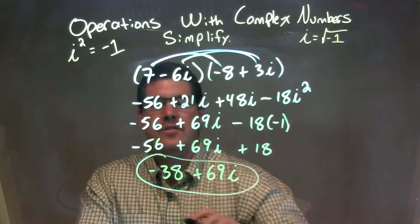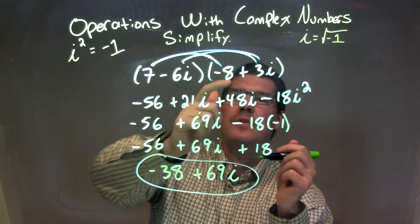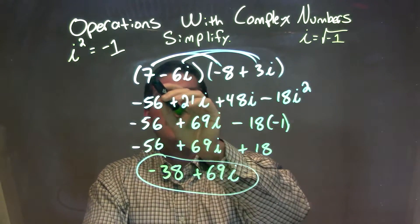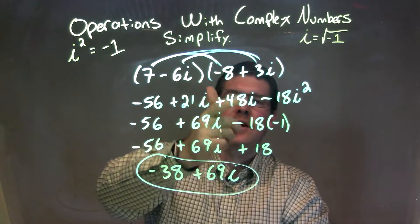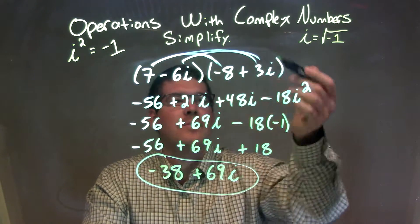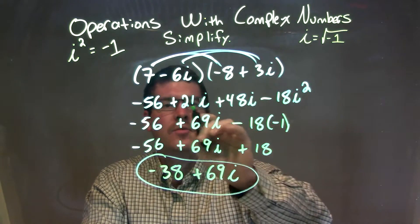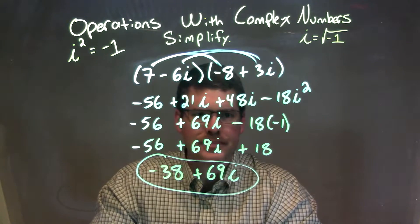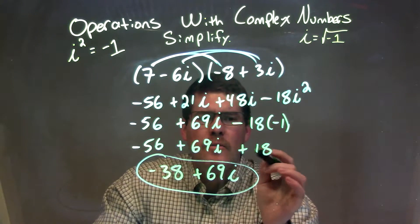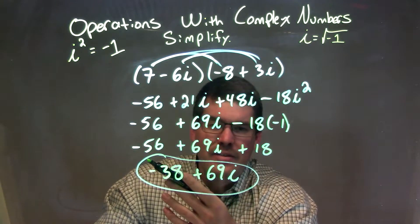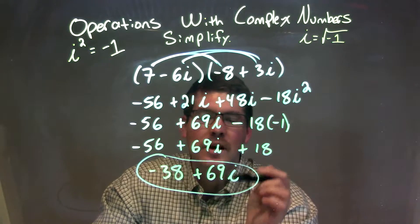And there we go. Our final answer is negative 38 plus 69i. Let's recap: We're given 7 minus 6i times negative 8 plus 3i. We distribute to get negative 56, positive 21i, positive 48i, and negative 18i squared. i squared becomes negative 1. 21i plus 48i became 69i. That minus 18 times negative 1 is positive 18. Combine positive 18 with negative 56 to get negative 38. So our final answer is negative 38 plus 69i. I'll see you next time.